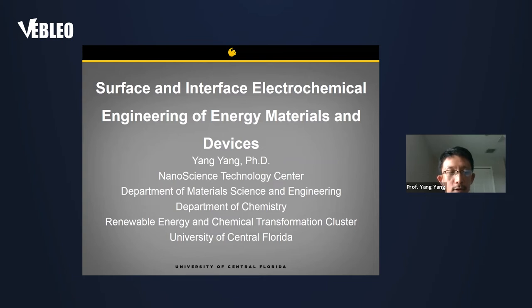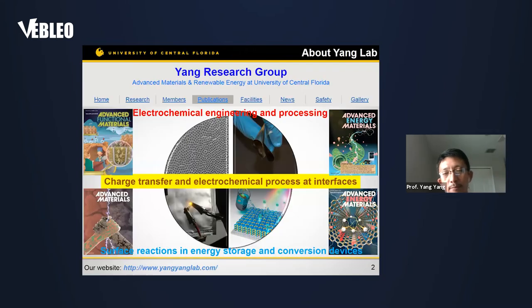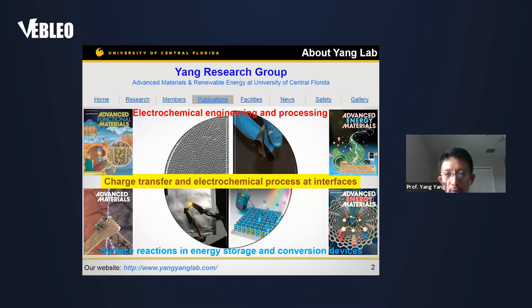What I'm going to introduce is how we could engineer the surface and interface of materials and devices for better devices. Firstly, I'll briefly introduce what we are doing in my lab. We are a chemical engineering lab working on electrochemical engineering and the processing of materials, and we use those materials for batteries, fuel cells, electrolytes, and different kinds of electrochemical devices.